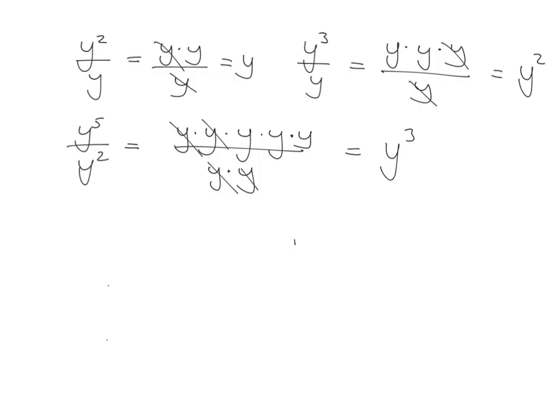Now over time you want to get faster at this. You want to be able to see 5 y's here, 2 y's there, so how many is going to be left when you start cancelling out? It's going to be 5 minus 2 which gives you 3. But until you can see that easily, just do it like this so that you get a very strong idea of what your exponents mean.